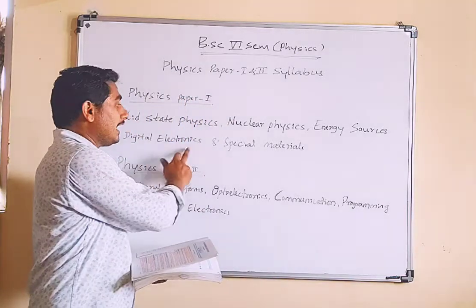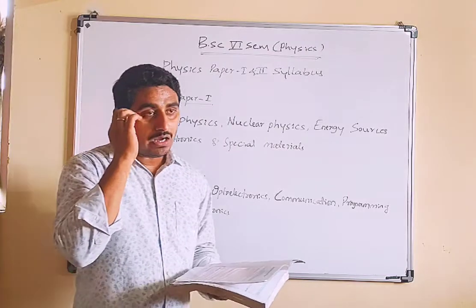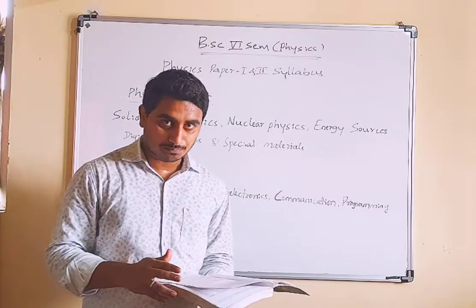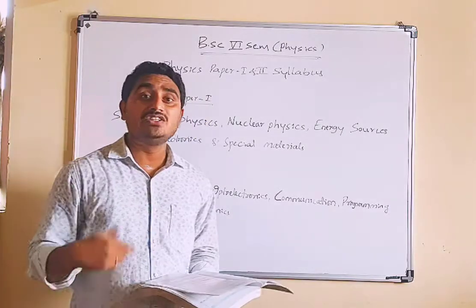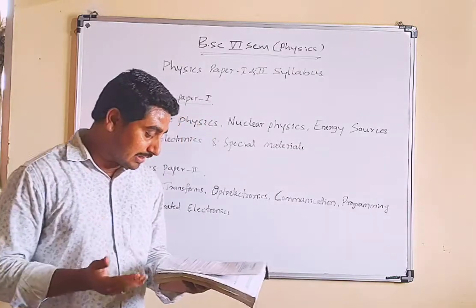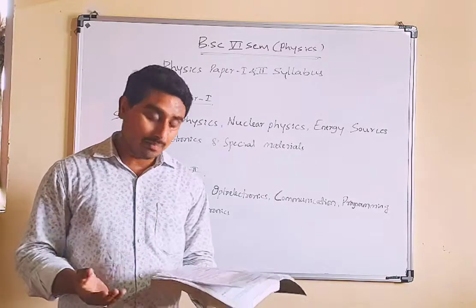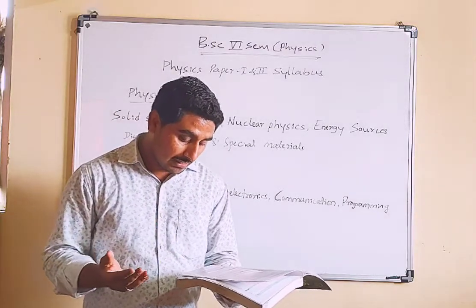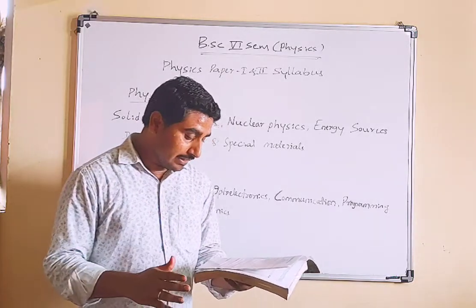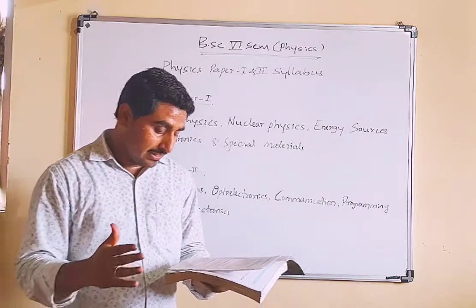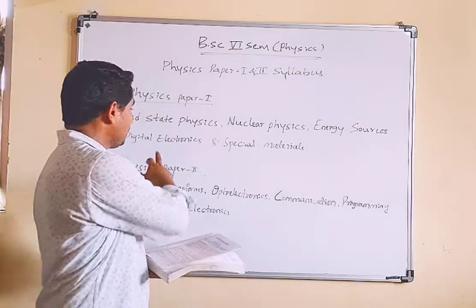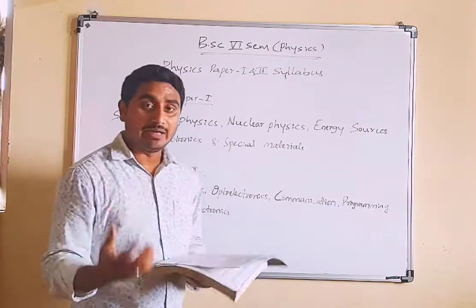Unit 5 covers digital electronics and special materials. In digital electronics we will study number systems — decimal, binary, hexadecimal — and conversion, Boolean algebra, truth tables, De Morgan's theorem, design of logic gates, and NAND and NOR gates.